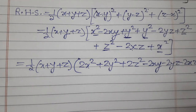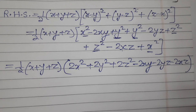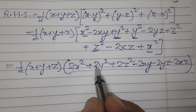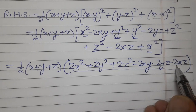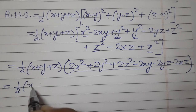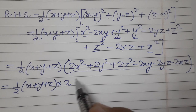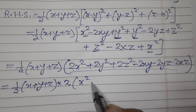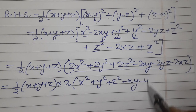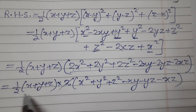Now we take 2 as common from all terms inside the bracket, since 2 is present everywhere. So we have: half × (x + y + z) × 2(x² + y² + z² - xy - yz - xz). The 2 and the half cancel out.